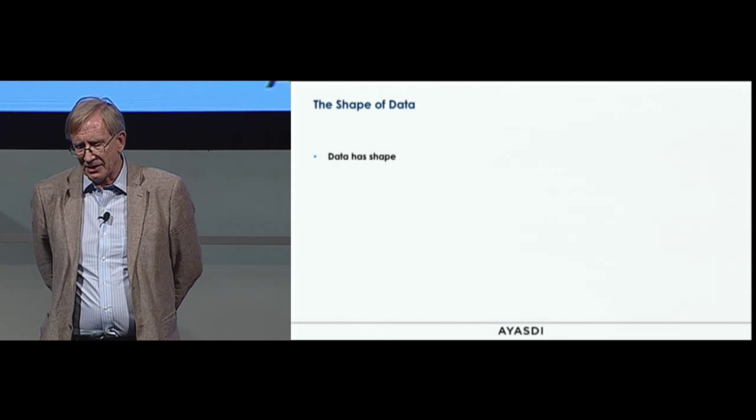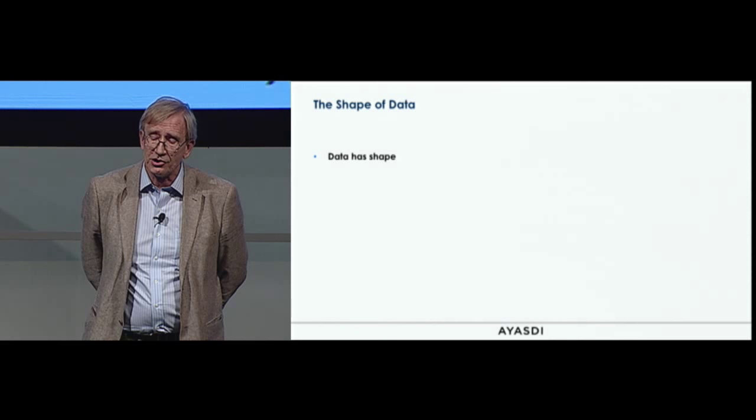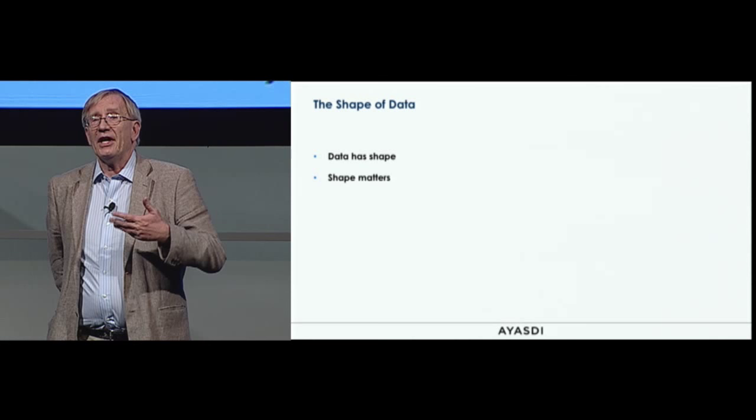Here's a paradigm that we have taken as something one should use and can use profitably: data has shape, and the shape matters. In fact, the shape is always the first thing you'd like to know — it's sometimes the only thing you need to know about the data.